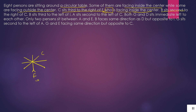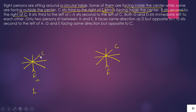Second clue: B sits second to the right of C — C ke right se second pe B hai. But we don't yet know if C is facing inside or outside the center — yeh pata nahi hai. So let's make a copy of the first diagram. We'll consider two cases: once assuming C is facing inside the center, and once assuming C is facing outside the center.